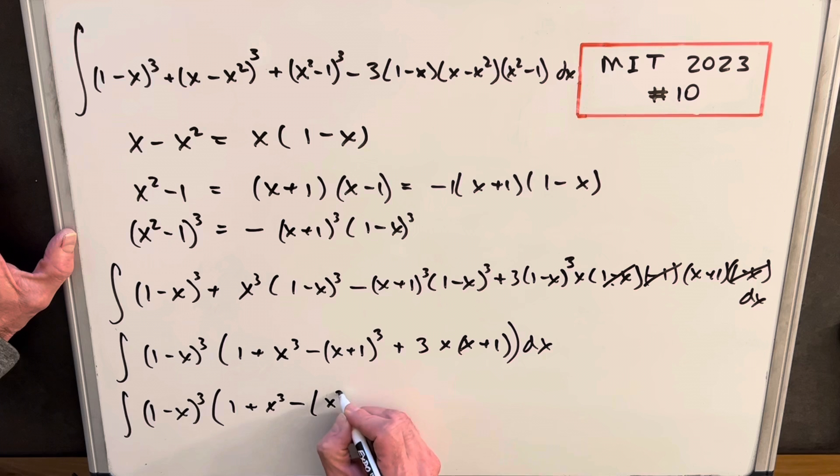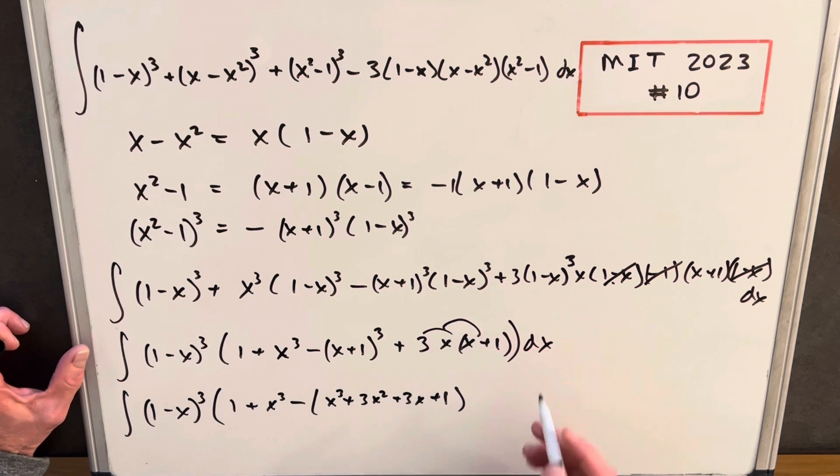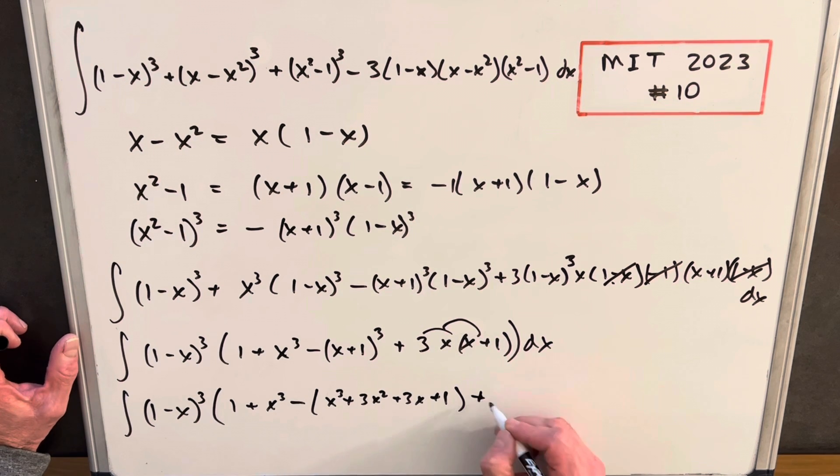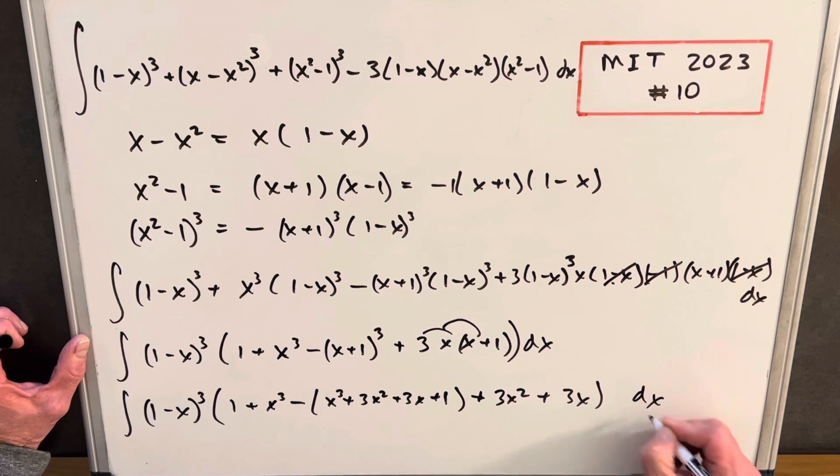x plus 1 cubed is going to be x cubed plus 3x squared plus 3x plus 1. And then I'm just going to distribute my 3x in here. We're going to have a plus 3x squared. And then we're going to have a plus 3x dx.